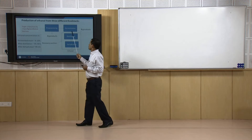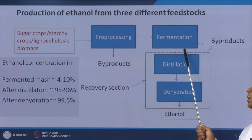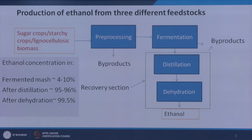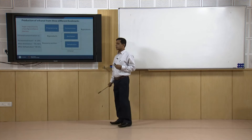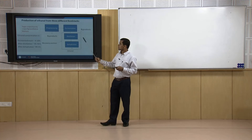After fermentation, the ethanol concentration is around 4 to 10 percent. Distillation gives us ethanol with 95 to 96 percent purity, but we need 99.5 percent purity for use in gasoline-ethanol blends. So an additional dehydration step is added for further purification of this ethanol, particularly to reduce the water content. We will discuss the details of dehydration methods later. Ultimately we will get ethanol and some by-products. This is the process flow sheet; now we will consider the pre-processing steps for different types of feedstocks.